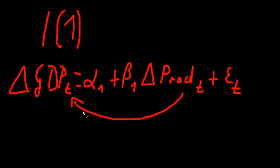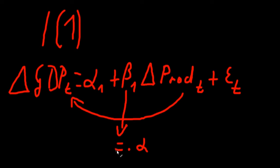Both variables are measured as index numbers. Beta one is statistically significant and equal to 0.2. The interpretation is straightforward: if you change the productivity index at year t by one unit, the GDP index at year t will change by 0.2 units. The first difference interpretation is even more straightforward than standard regression because we are directly relating changes to each other.